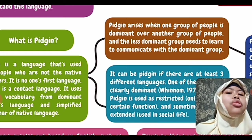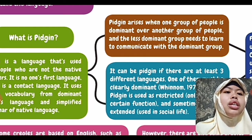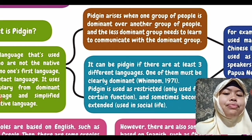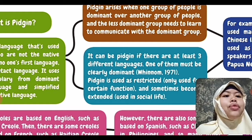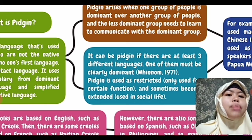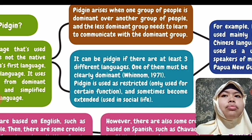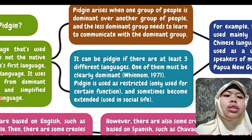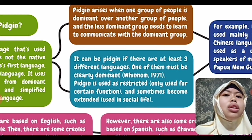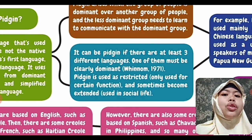The dominant group has an important role in controlling the language within the group. It can be Pidgin if there are at least three different languages, and one of them must be clearly dominant — this is based on Renome (1971). If there is just one language, there cannot be a Pidgin. So a Pidgin requires at least three different languages.